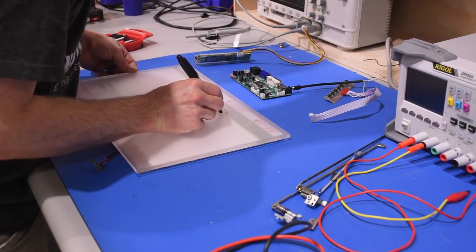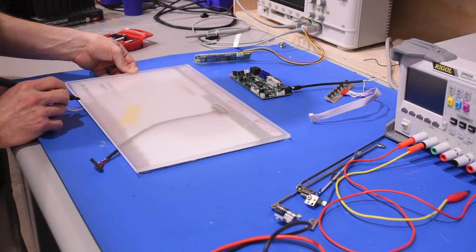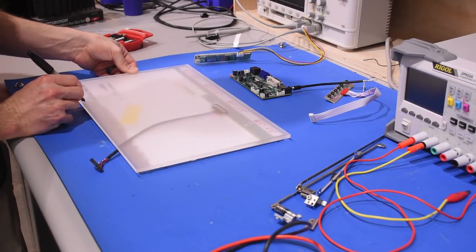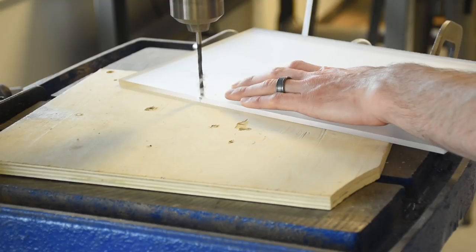I marked the hole locations for the signal ribbon and for the backlight power because I wanted everything on the backside of the monitor. Then I drilled and cut along all my marks.